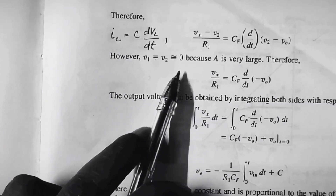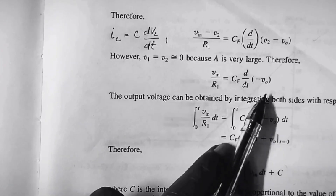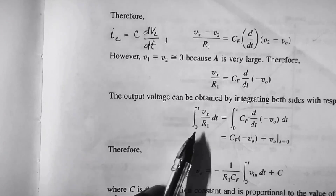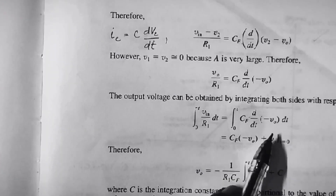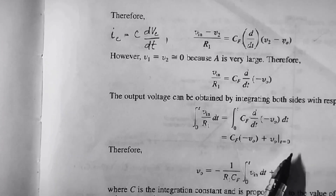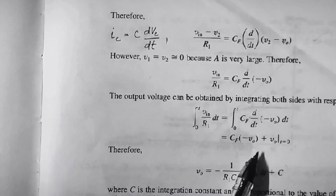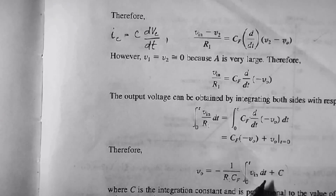Since the op-amp is ideal, V1 is equal to V2 is equal to 0. Then the equation becomes V_input by R1 is equal to CF into d/dt of minus V_output. Integrating both sides from 0 to t, we get the integral from 0 to t of V_input by R1 dt is equal to CF into minus V_output. Solving, we get V_output is equal to minus 1 by R1·CF times the integral from 0 to t of V_input dt, plus a constant C.